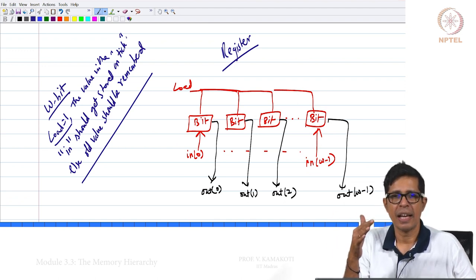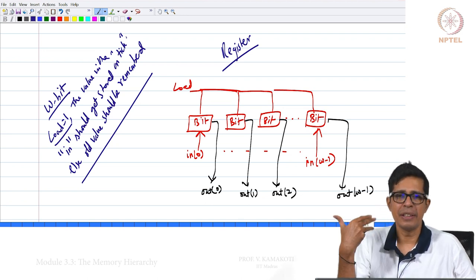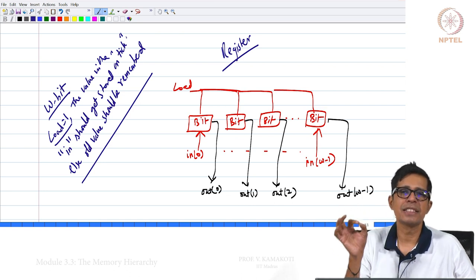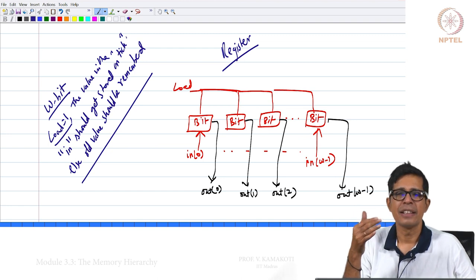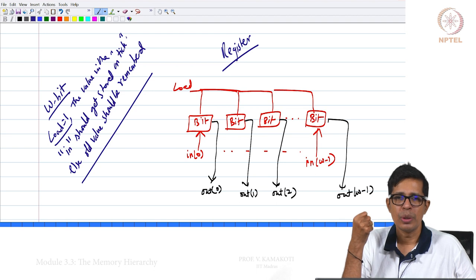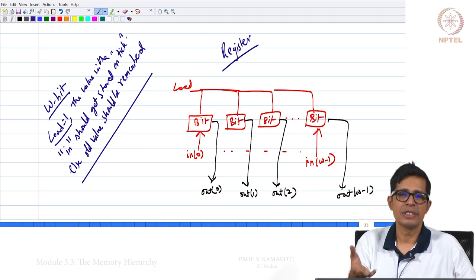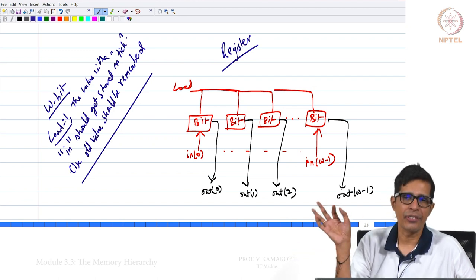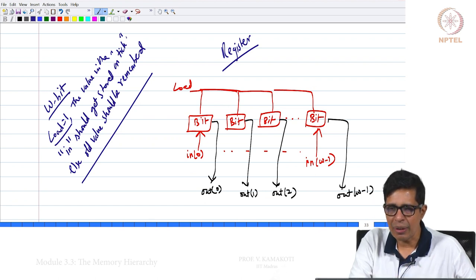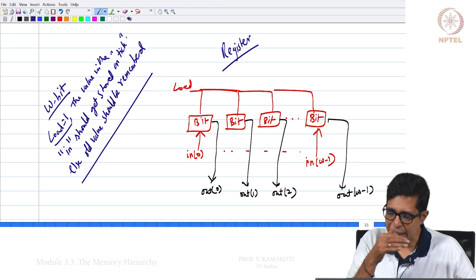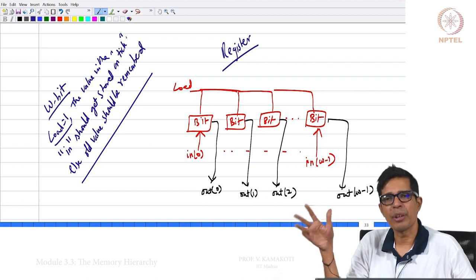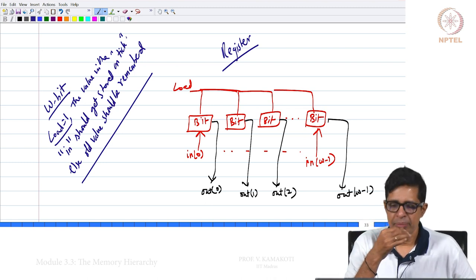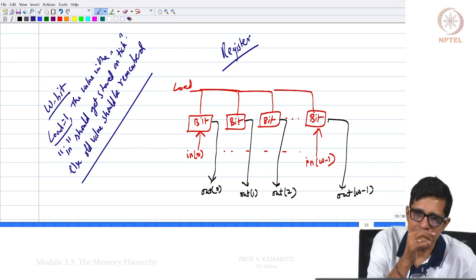The same load goes to all bit instantiations. Bit has two inputs: load and 'in'. We instantiate W bits with a common load signal, individual in[0] to in[W-1] inputs, and tap out[0] to out[W-1] as outputs. A register is the first element in the storage hierarchy inside a processor. It can remember a W-bit value — in the real project a 16-bit register — across many ticks and tocks.